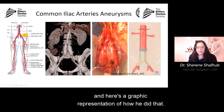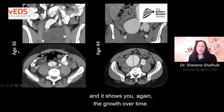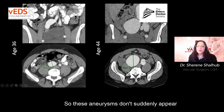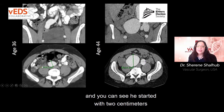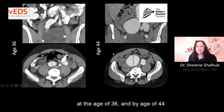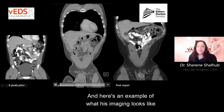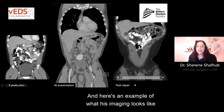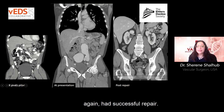Here is a graphic representation of how that iliac repair was performed. This is an example of a patient who had a common iliac artery aneurysm that grew over time — starting at two centimeters at age 36, and reaching seven centimeters by age 44, when it was successfully repaired. These aneurysms don't suddenly appear large; they grow over time. The imaging before and after repair is shown.